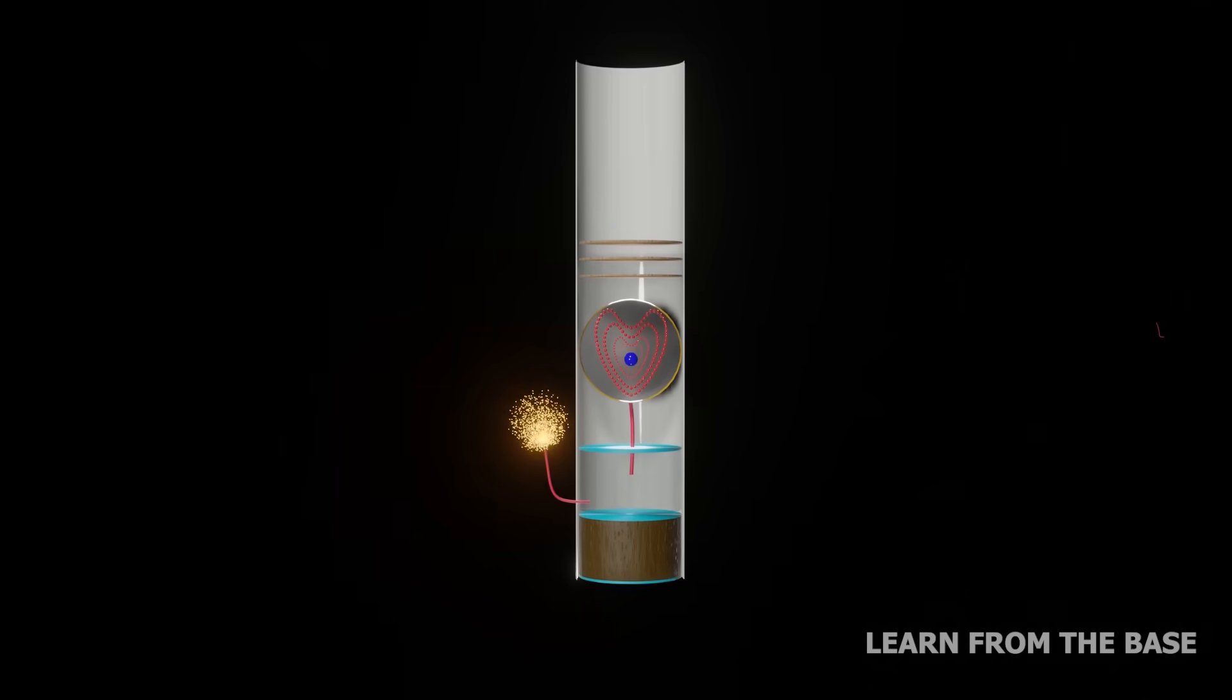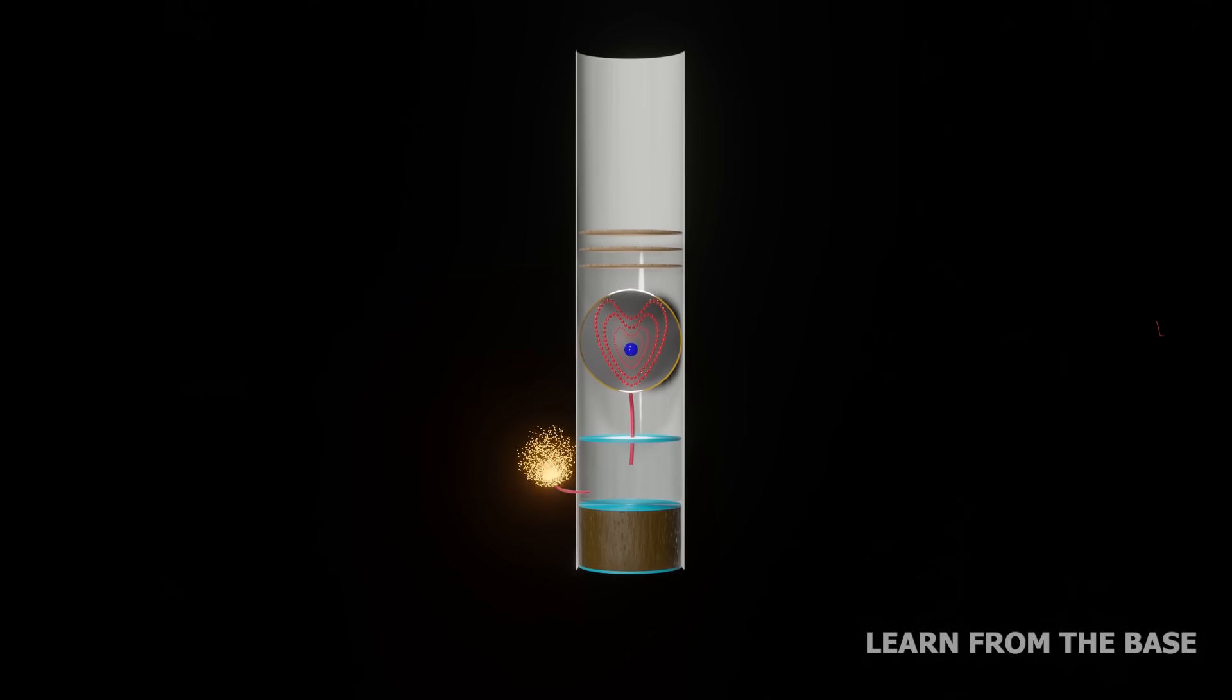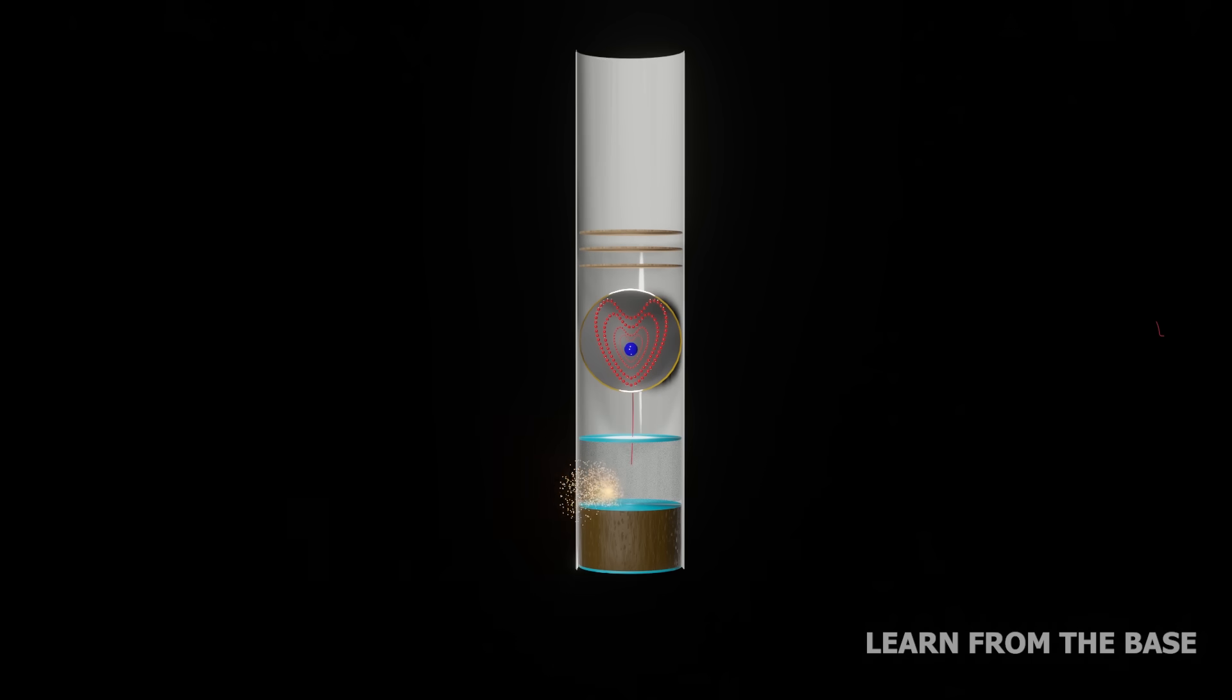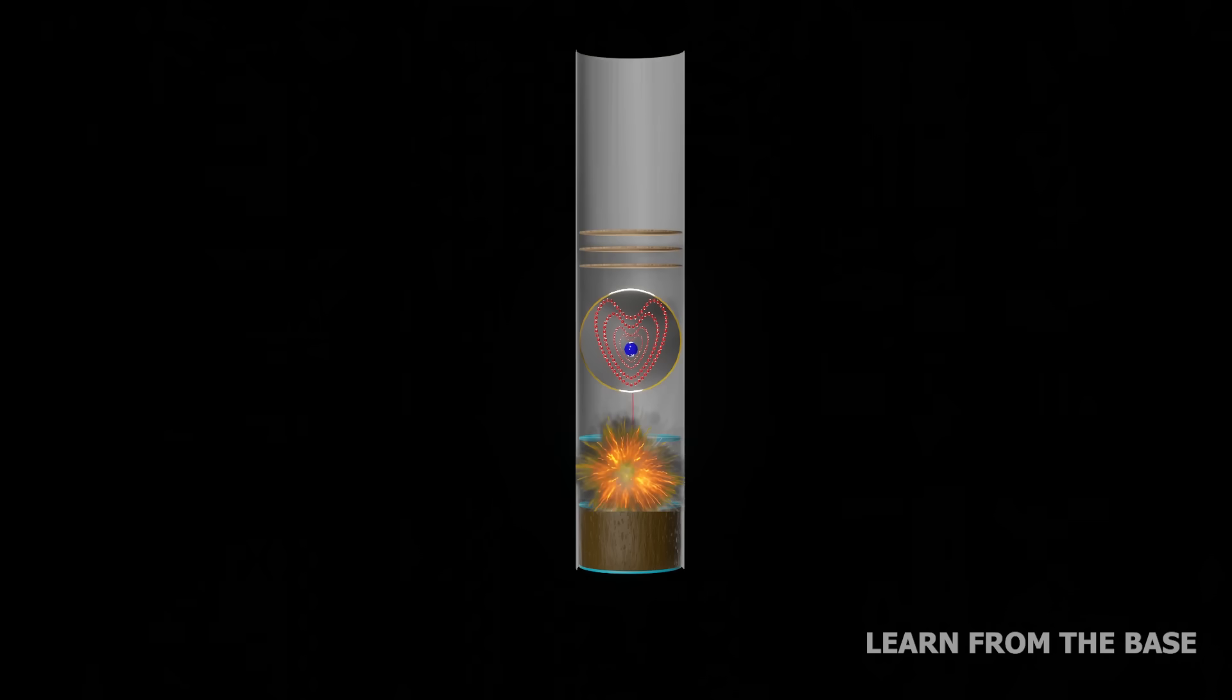Let's take a closer look at what actually happens after the ignition. The main fuse lights the lift charge. The ignition of the lift charge generates heat and gas. The trapped heat and gas push vigorously at the inside of the launch tube until an explosion results.